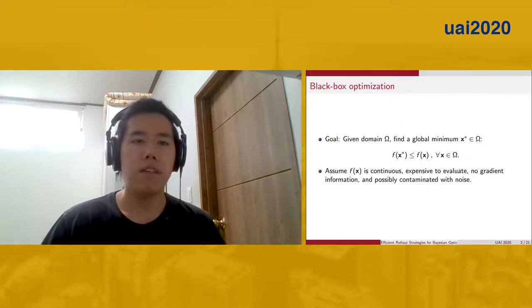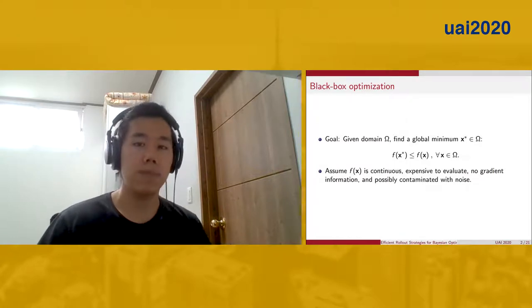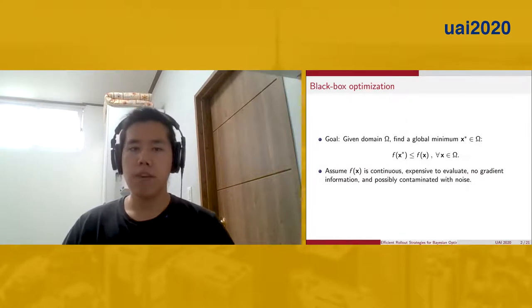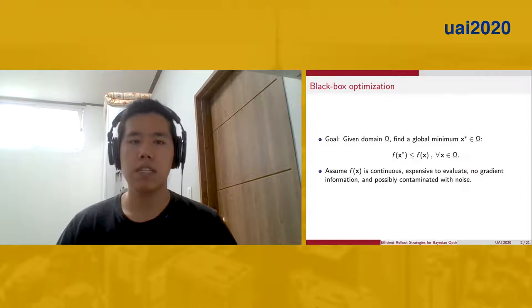The objective f is assumed continuous and is black box because it's expensive to evaluate, has no gradient information, and is possibly contaminated with noise.